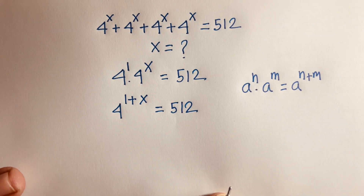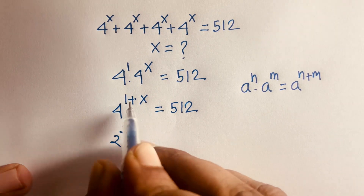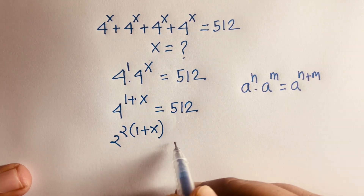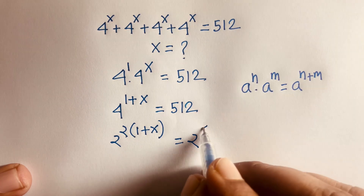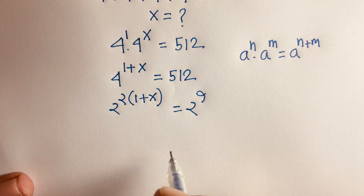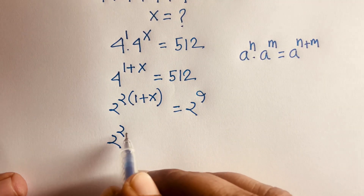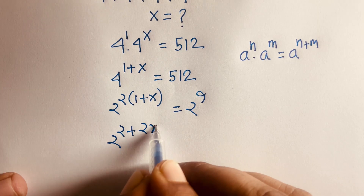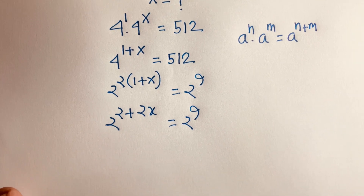Then, 4 can be written as 2 to the power 2, so we have 2 to the power 2 times 1 plus x, and 512 is equal to 2 to the power 9. Expanding, 2 to the power 2 plus 2x is equal to 2 to the power 9.